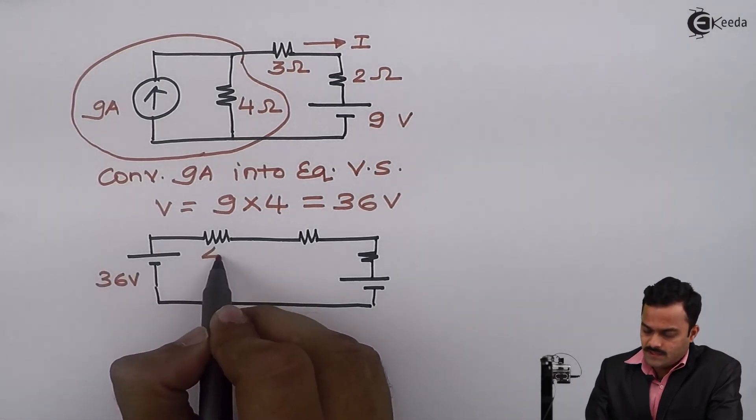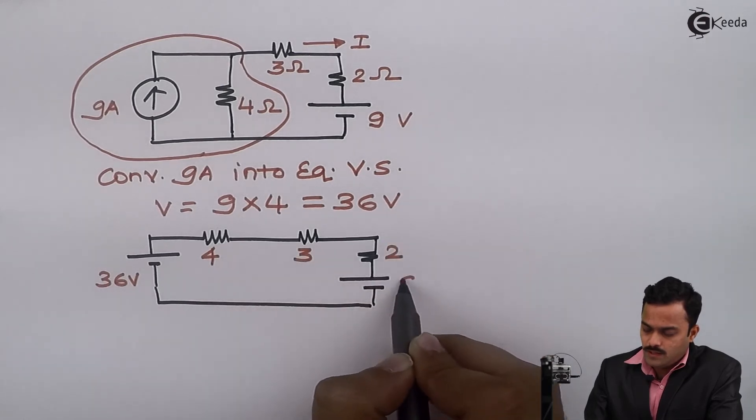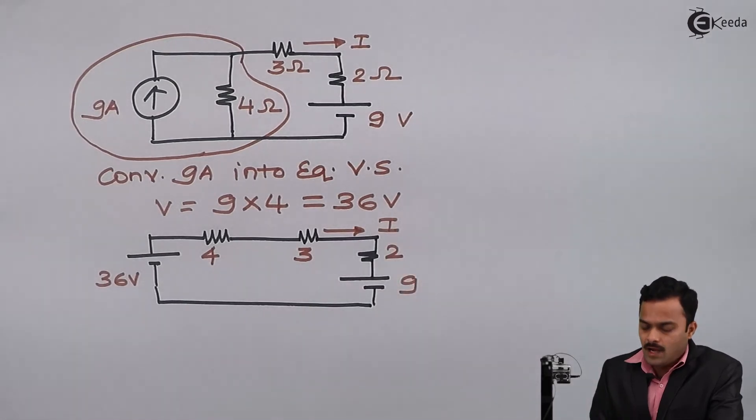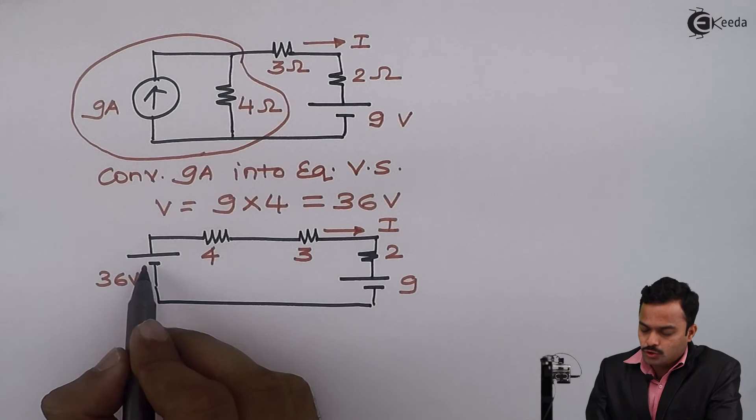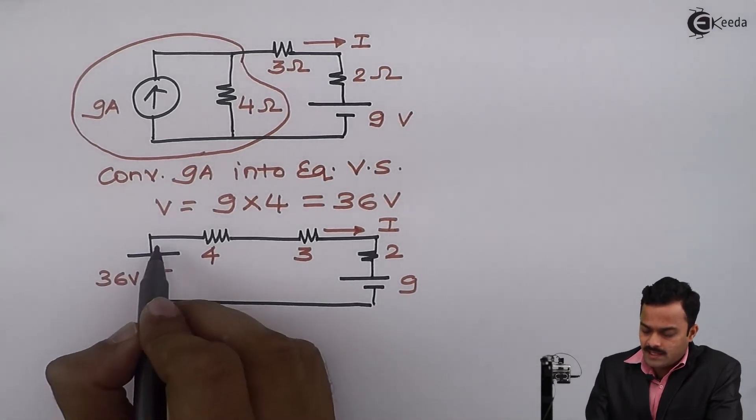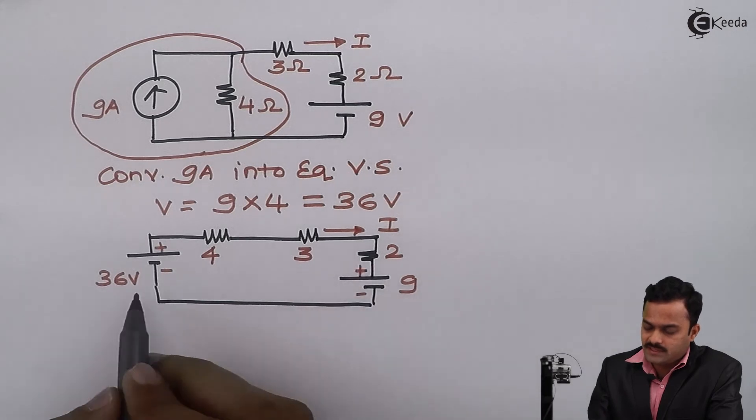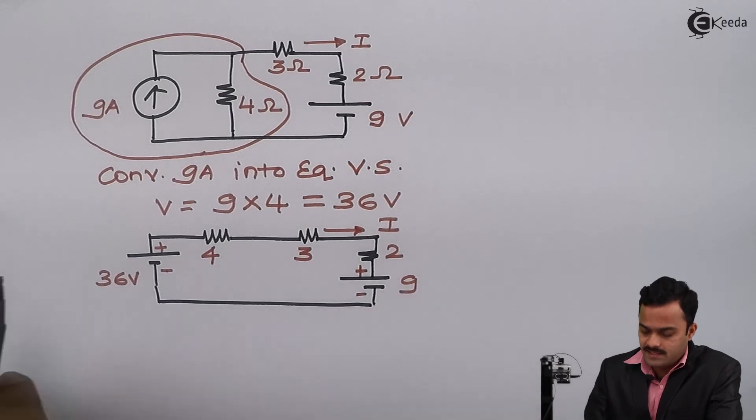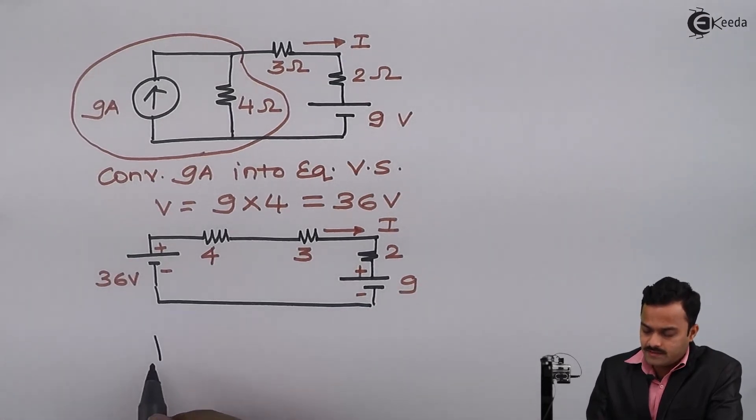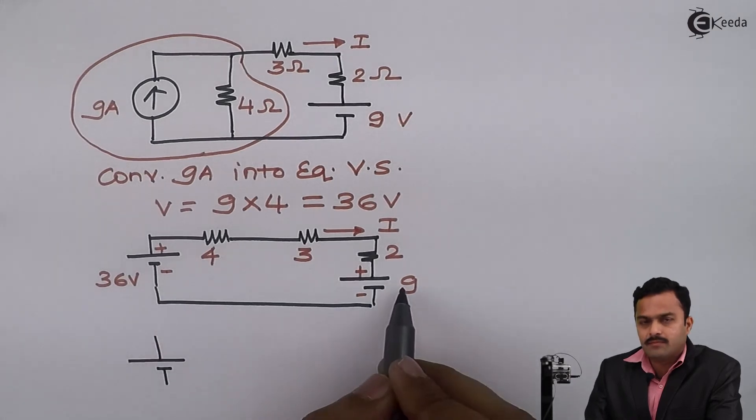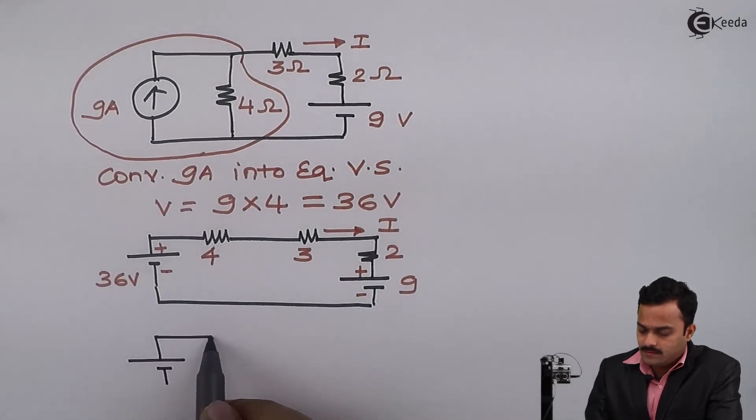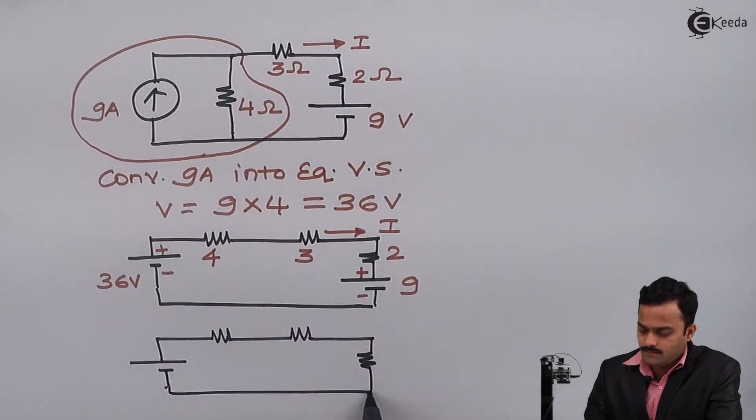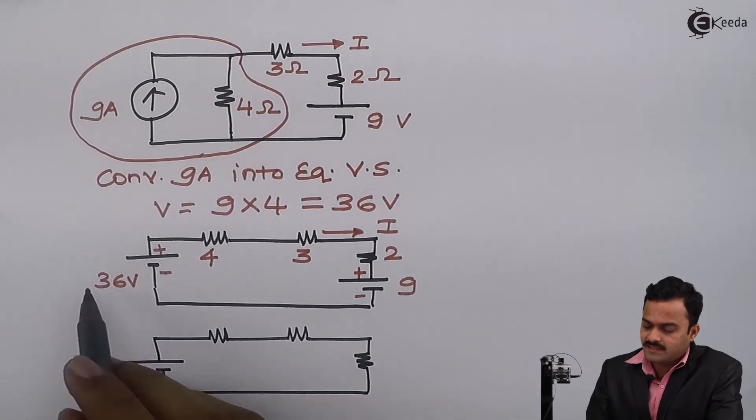36 volts, 4 ohms, 3 ohms, 2 ohms, and 9 volts. We have to find this current I. Now it is a very simple circuit. Two batteries are connected in series opposition, meaning the same terminals are connected. So 36 and 9 are in series opposition. The resultant will be 36 minus 9, which is 27 volts.